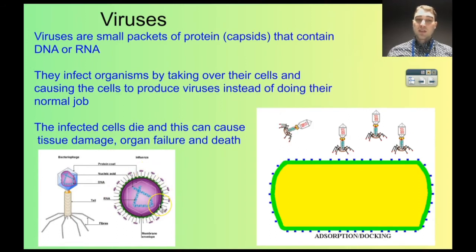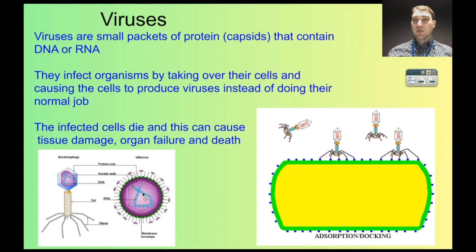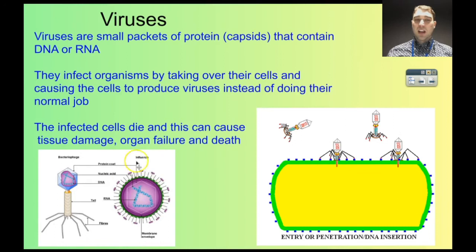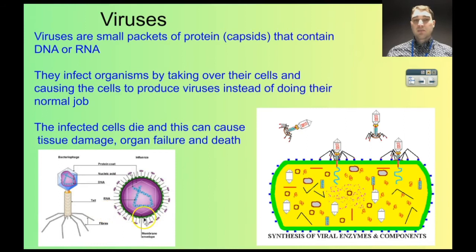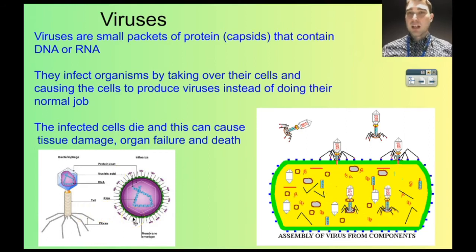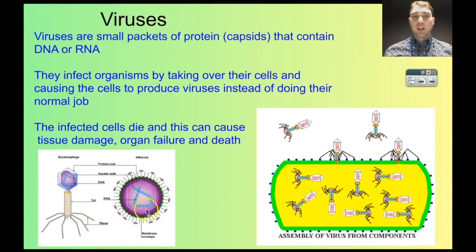Sometimes the capsids have a triglyceride layer on them — so an oily or fatty layer. The outside can have proteins sticking out as well. There's a variety of shapes and many different shapes of virus.